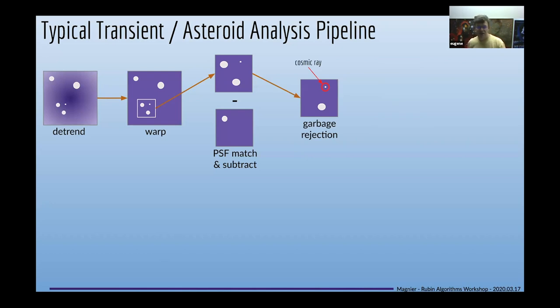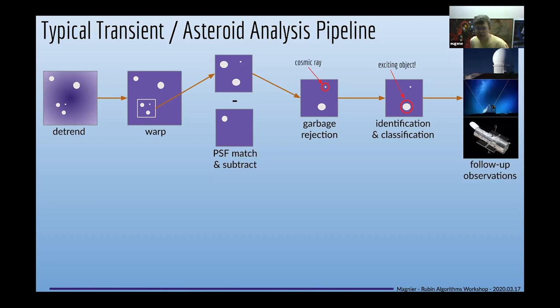Garbage rejection is the next critical step. Once you've rejected the garbage, what's left are exciting objects of some kind so you have to identify them from your images. Are they supernovae? Are they asteroids? Make some identification of the types of objects and then you can do follow-up. We usually use CFHT for following up faint asteroids or images of faint supernovae, KECK for spectroscopy, and HST in some cases. In this talk I'll be focusing on the PSF match and subtract step and the garbage rejection.